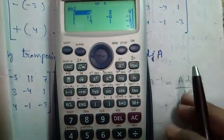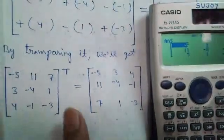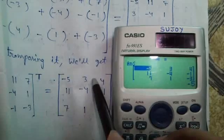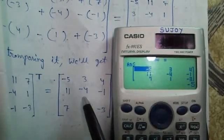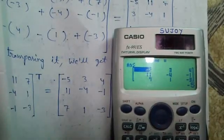So A inverse into determinant of matrix A, this equals to, you will get your adjoint A matrix: minus 5 3 4, 11 minus 4 minus 1, 7 1 and minus 3.